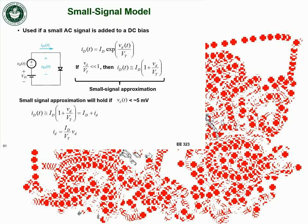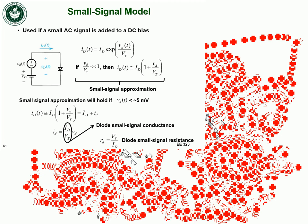Rearranging, the AC current i_d equals (I_D / V_T) · v_d. The term I_D / V_T depends only on DC quantities and the thermal voltage — this is the diode's small signal conductance g_d. Taking the inverse of conductance gives resistance, so we define the diode's small signal resistance r_d = V_T / I_D. This is the basis for the actual small signal model.